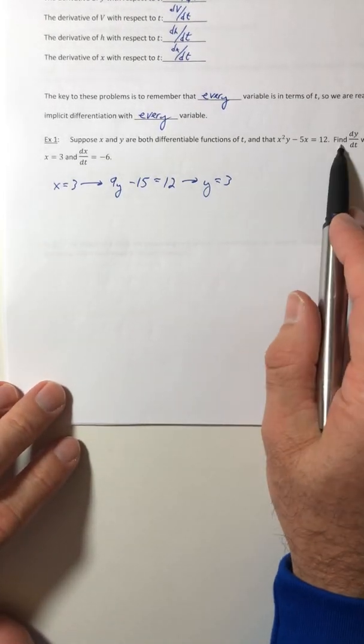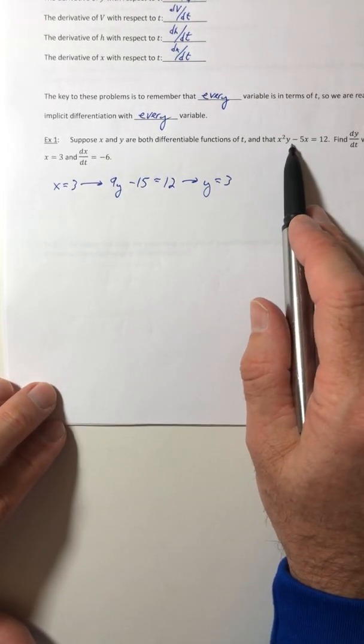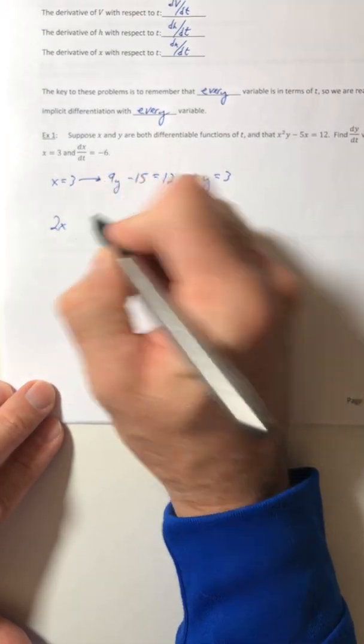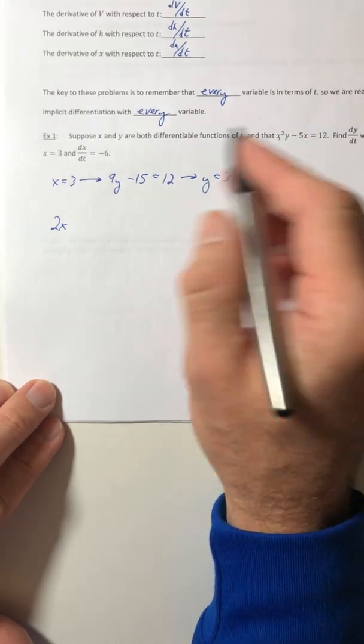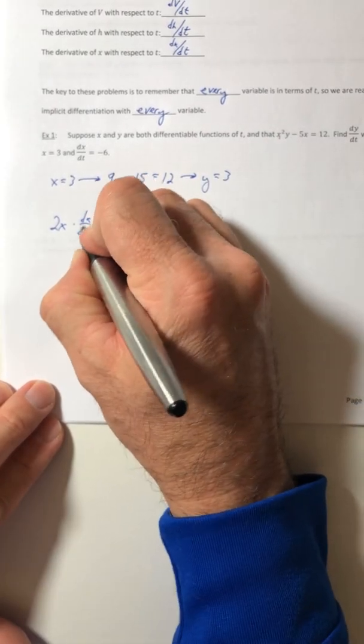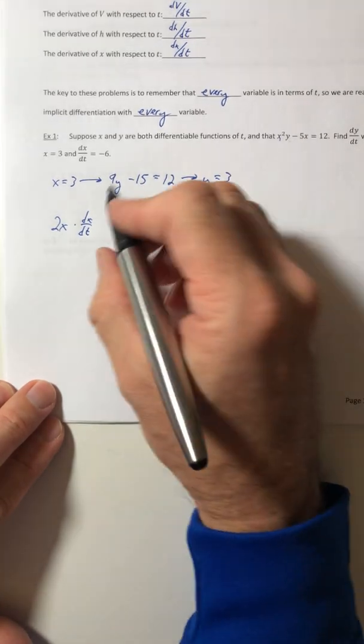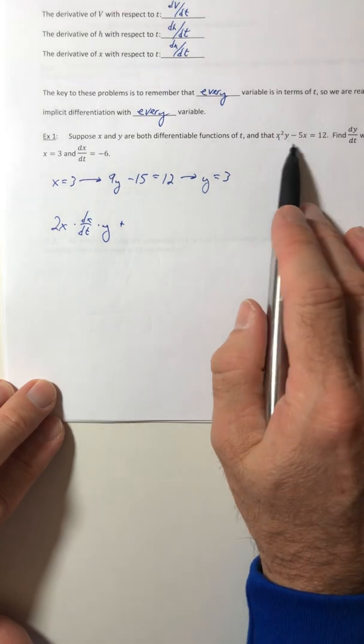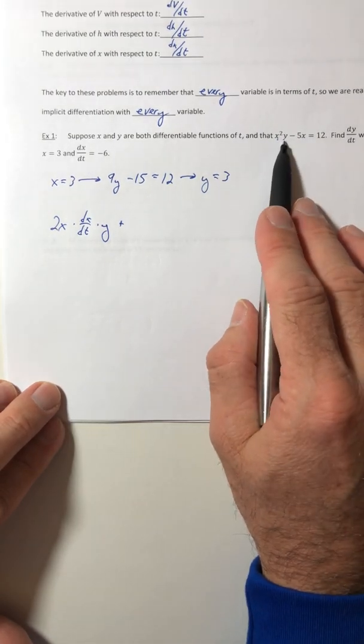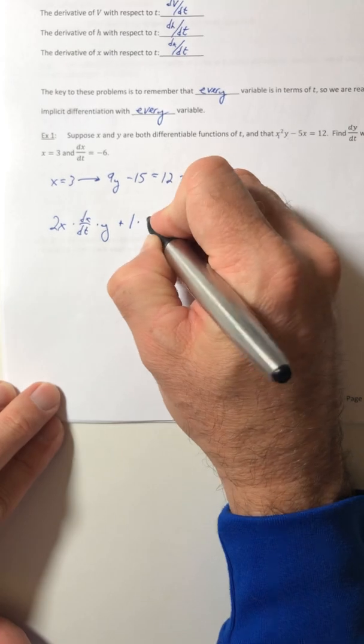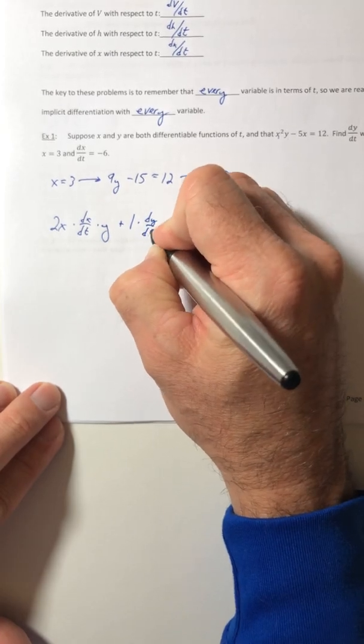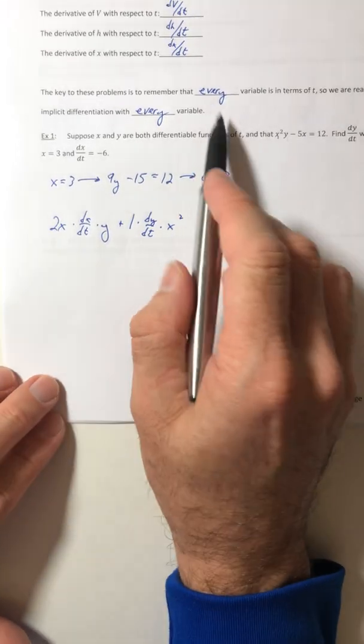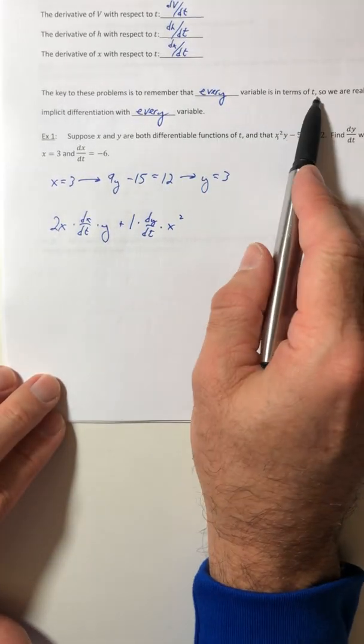Okay, so now let's go ahead and get the derivative, starting with that product rule. So the derivative of x² is 2x, and I just did the derivative of a variable with respect to t, so dx/dt times y, plus now it switches, so the derivative of y would be 1 times dy/dt times your x².